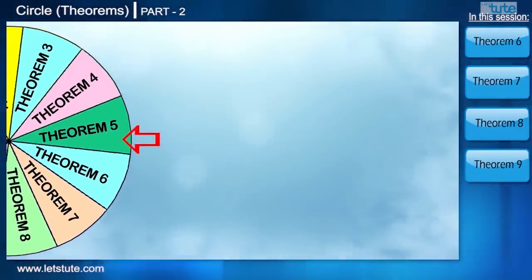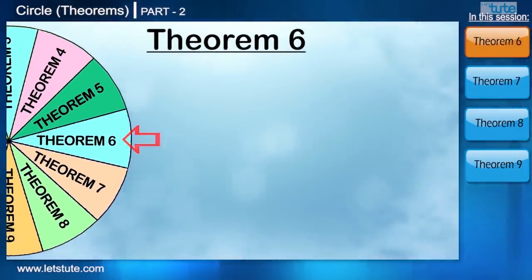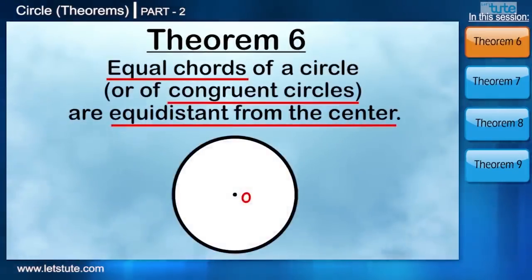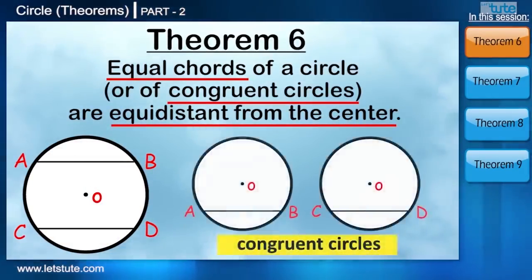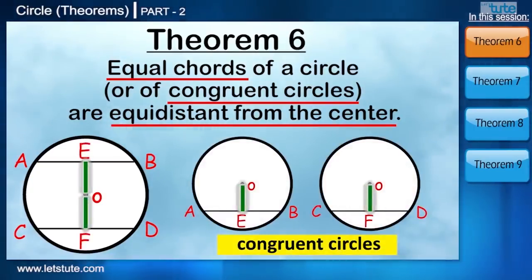Let's have a look at the statement of theorem number six. Equal chords of a circle or of congruent circles are equidistant from the center.